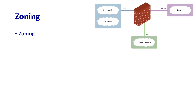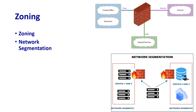Zoning in physical security and network segmentation: let's draw parallels between zoning in physical security and network segmentation in the digital realm. Zoning in physical security involves dividing a facility into security zones with different levels of access control, including public areas, office spaces, and secure data centers. Similarly, network segmentation involves dividing a network into isolated segments, limiting access and preventing lateral movement by attackers. Both zoning and network segmentation enforce the principle of least privilege, minimizing the attack surface and enhancing overall security.